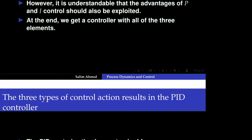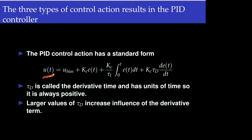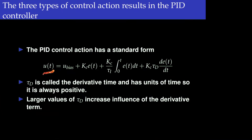Together we use what is called the proportional-integral-derivative controller. For the PID controller, the control action is the summation of the bias term, which is always there, the proportional term, the integral term, and the derivative term.